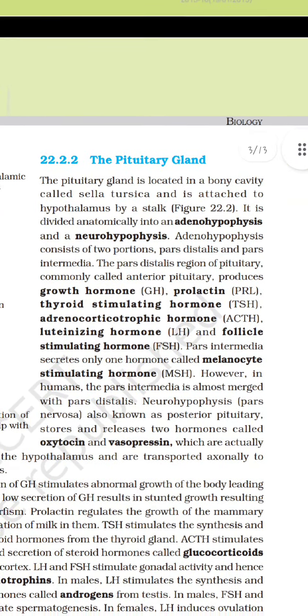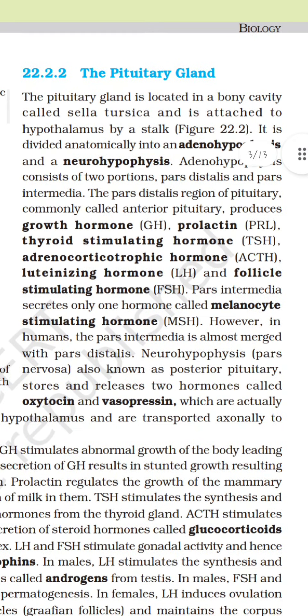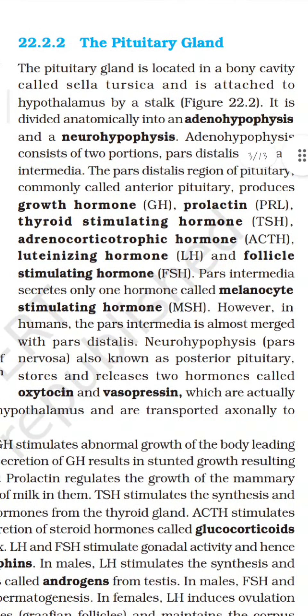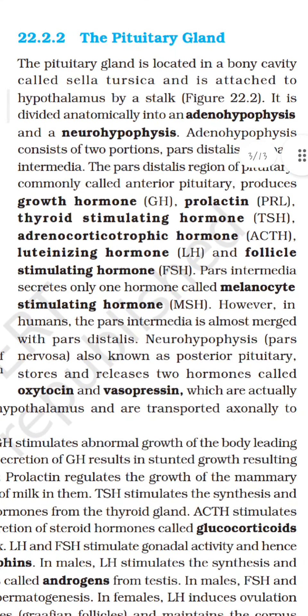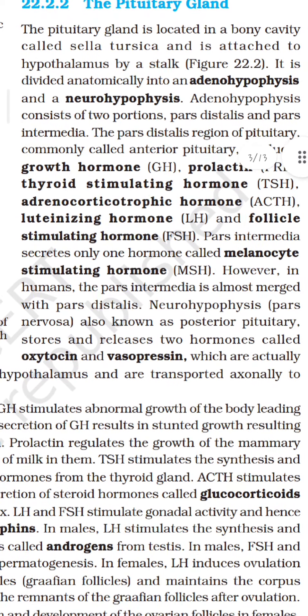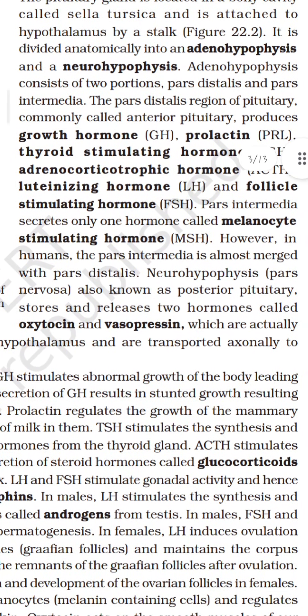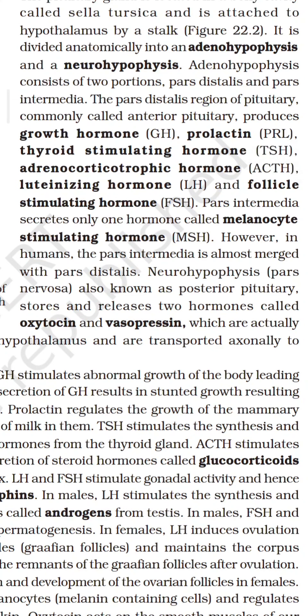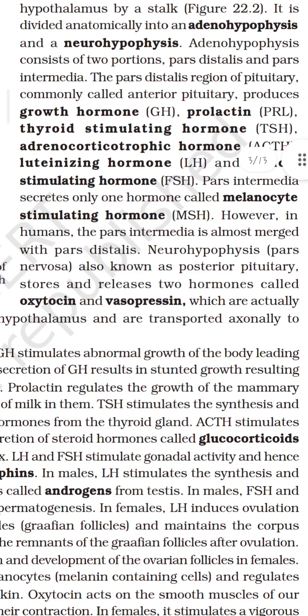The pituitary gland is located in a bony cavity called the sella turcica and is attached to the hypothalamus by a stalk. It is divided anatomically into an adenohypophysis and a neurohypophysis. The adenohypophysis consists of two portions: pars distalis and pars intermedia. The pars distalis, commonly called the anterior pituitary, produces growth hormone, prolactin, thyroid stimulating hormone, adrenocorticotrophic hormone, luteinizing hormone and follicle stimulating hormone. The pars intermedia secretes only one hormone called melanocyte stimulating hormone; however, in humans, the pars intermedia is almost merged with pars distalis.